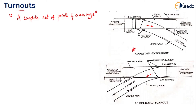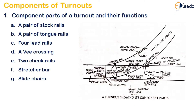Now let us see what are the components of the turnouts and their functions. The first component is a pair of stock rails — stock rails are nothing but your main line. Then there is a pair of tongue rails; this branching-out rail is called your tongue rail, so two pairs of tongue rails will be there. The function of the stock rail is to facilitate the smooth working of your tongue rail, and the function of the tongue rail is to facilitate the diversion of the train from the main to the branch track.